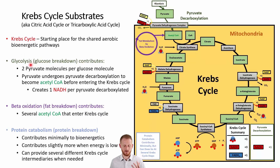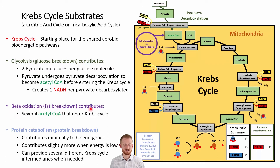If we are looking at fat, beta oxidation is the process of breaking down fat. It contributes to the Krebs cycle also through creating acetyl-CoA, so beta oxidation creates acetyl-CoA that goes into the Krebs cycle.